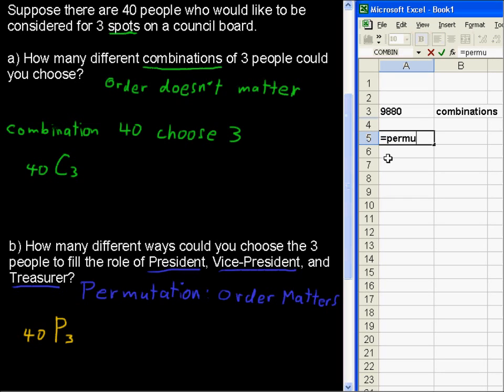So, equals permut. That's the command. Again, if you forget that, you can always just go up to this function, insert function, and go for it that way.